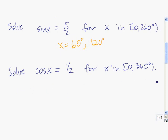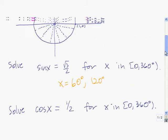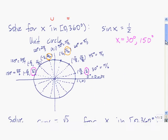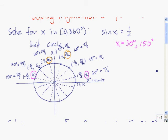Now you're looking for where the cosine is equal to 1 half. Cosine of x is equal to 1 half. We know that the cosine is the x-coordinate on the unit circle, so we're looking for all the spots in between 0 and 360 degrees where the x-coordinate is 1 half. Here's one spot, and that's equal to 60 degrees.